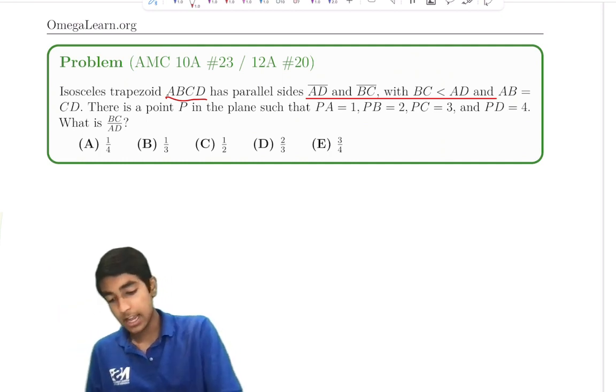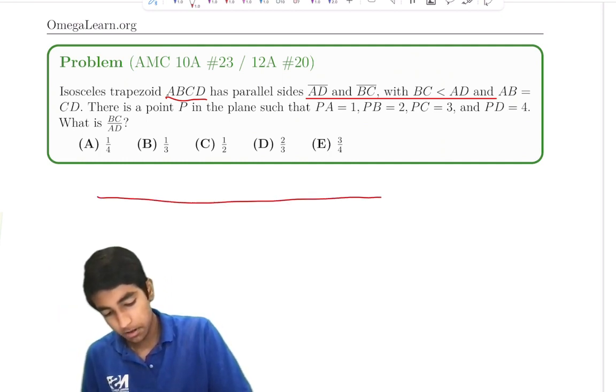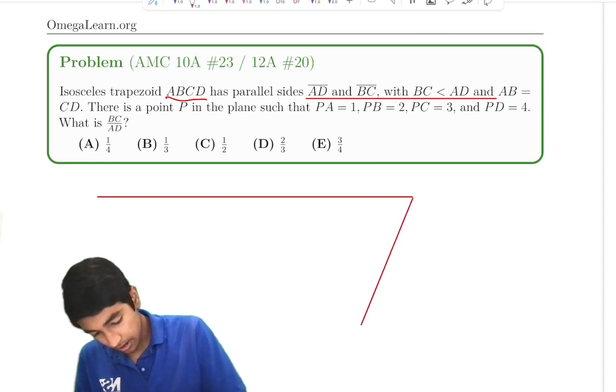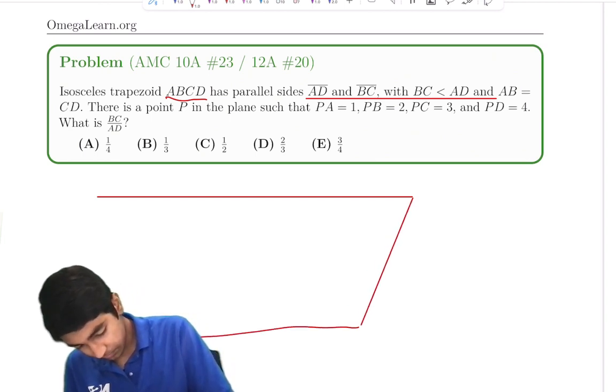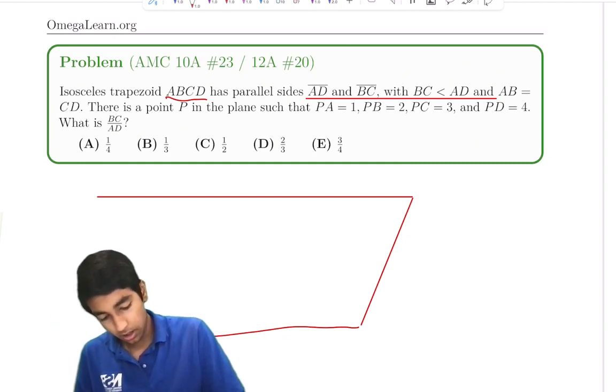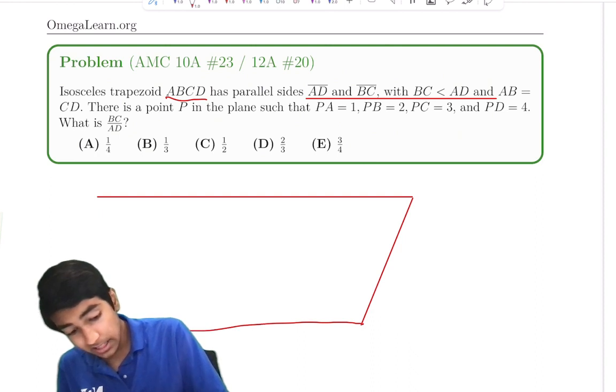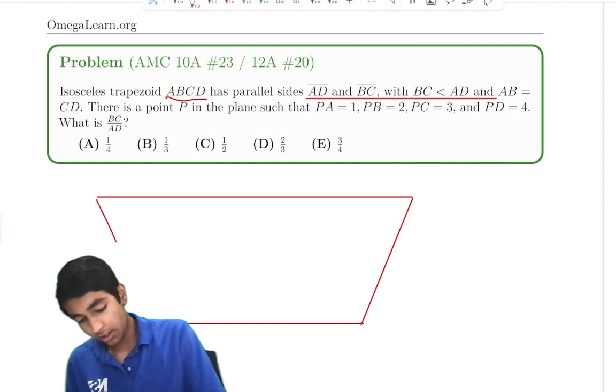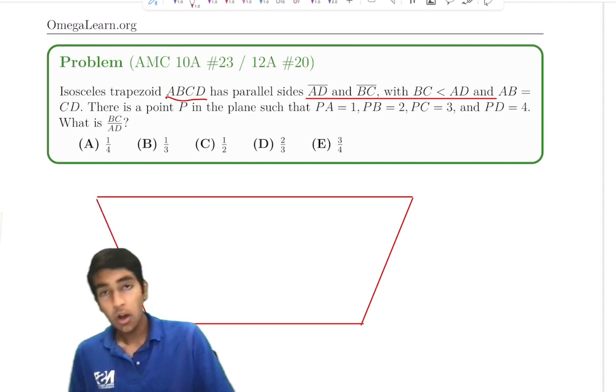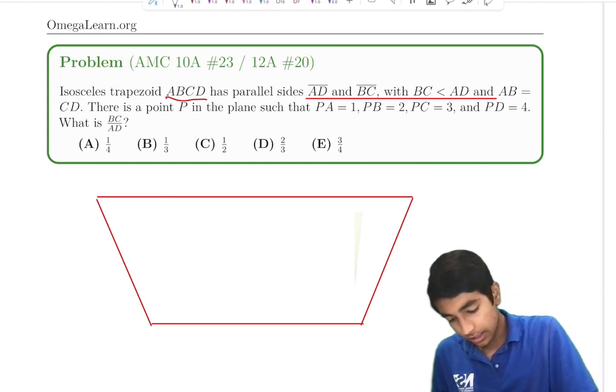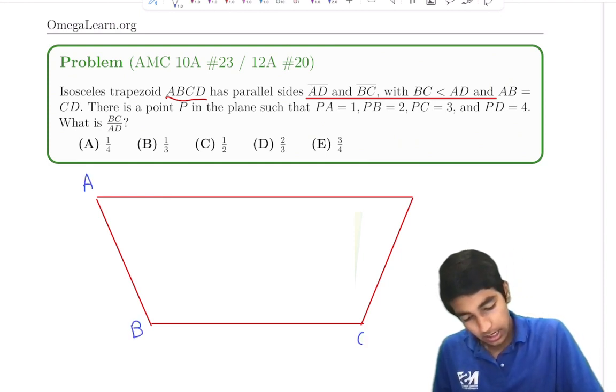So let's draw what this will look like. BC is less than AD, so we have AD on top, and then we can have B here, and then maybe C is here. We have AD and then BC will be parallel. The key thing to note here is it's an isosceles trapezoid, and the main advantage is we know both of these corresponding sides are equal. So let's label this A, B, C, D.